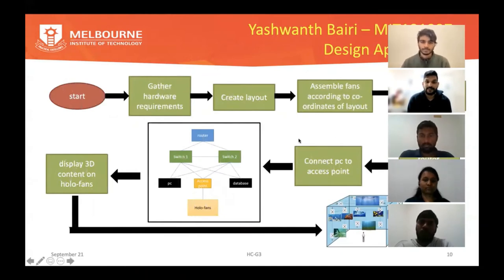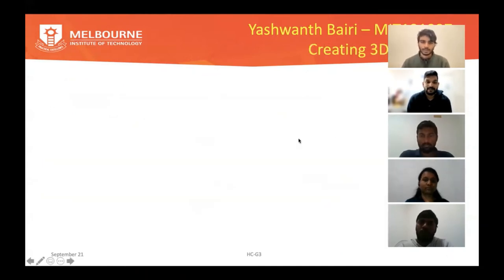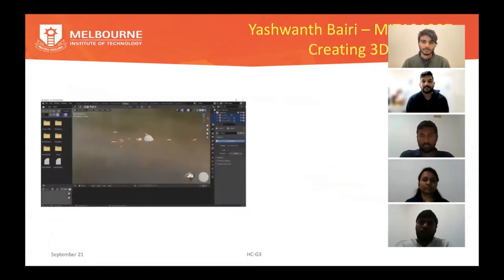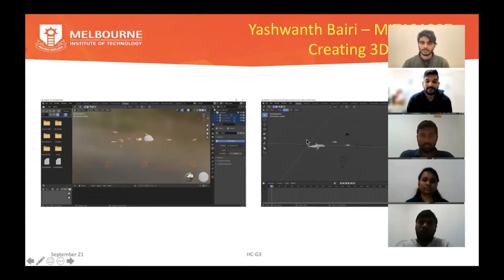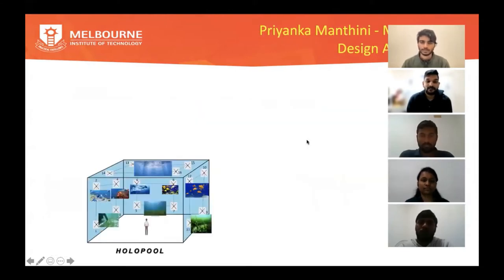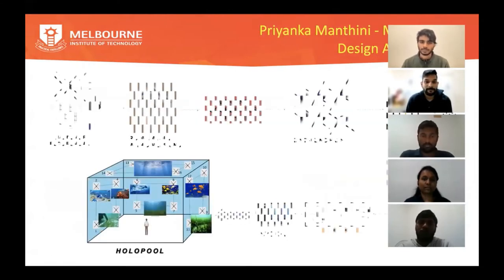Hi everyone, myself Eshwanth Bhairi. This is my design approach. I have created two scenes in Blender — one with four cameras in a single line on a single side, and another with four cameras on all sides of a single scene.